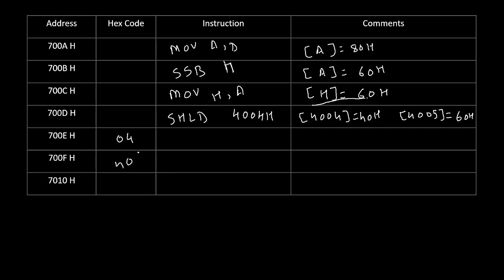Finally, we terminate the program by writing HLT or RST1. These instructions stop the program. This is a complete program for 16-bit subtraction on the 8085 — instead of doing 16-bit subtraction directly, we perform two separate 8-bit subtractions. Thank you.